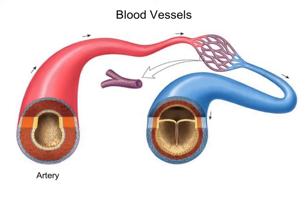The next blood vessel is called the vein and by definition the vein is a blood vessel that carries blood to the heart, regardless of whether it carries oxygen-rich or oxygen-poor blood. Again, 99% of the time veins carry oxygen-poor blood. The 1% that carries oxygen-rich blood again occurs in the heart and that would be the pulmonary veins.